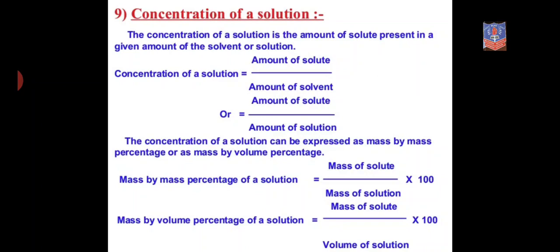The formula is: concentration of solution equals mass of solute upon mass of solution, or amount of solute upon amount of solvent. Divide the solute mass on top by the solution mass on the bottom to get the concentration of the solution.